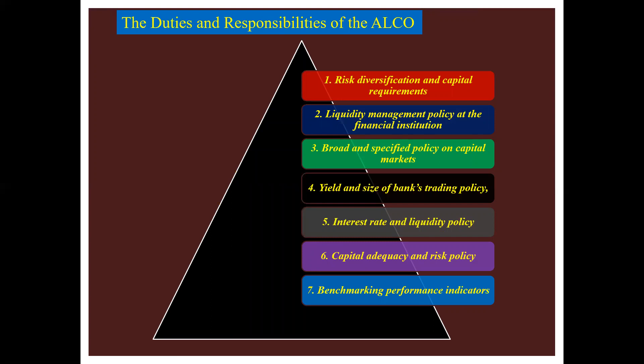The next topic is the duties and responsibilities of ALCOs. The complete list varies from institution to institution. However, a general list includes: first, risk diversification and capital requirements; second, liquidity management policy at the financial institution; third, broad and specified policy on capital markets requirements; fourth, yield and size of bank trading policy, including diversification between instruments and currency; fifth, interest rate and liquidity policy; sixth, capital adequacy and risk policy; and seventh, benchmarking performance indicators.